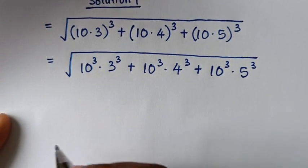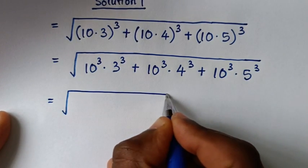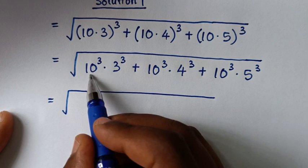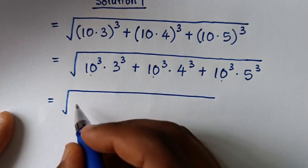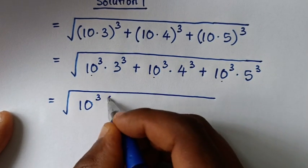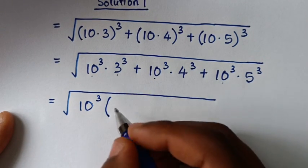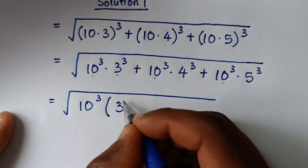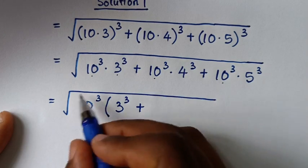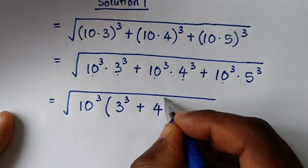In the next step, 10 to the power 3 is common, so we factor it out of the bracket. Dividing each term by 10 to the power 3 leaves us with 3 to the power 3 plus 4 to the power 3 plus 5 to the power 3 inside the bracket.